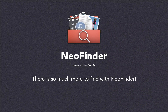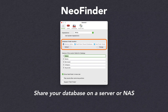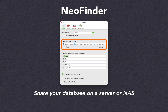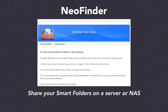There is so much more to find with NeoFinder. First, NeoFinder will store an alias or network bookmark pointing to your selected database folder in its preferences. That allows NeoFinder to mount the server volume for you when you launch NeoFinder, in case that volume is not available at that time. Second, you can also share both your albums and smart folders with all other users in your network. Please check the NeoFinder user's guide for more details about how to do that.